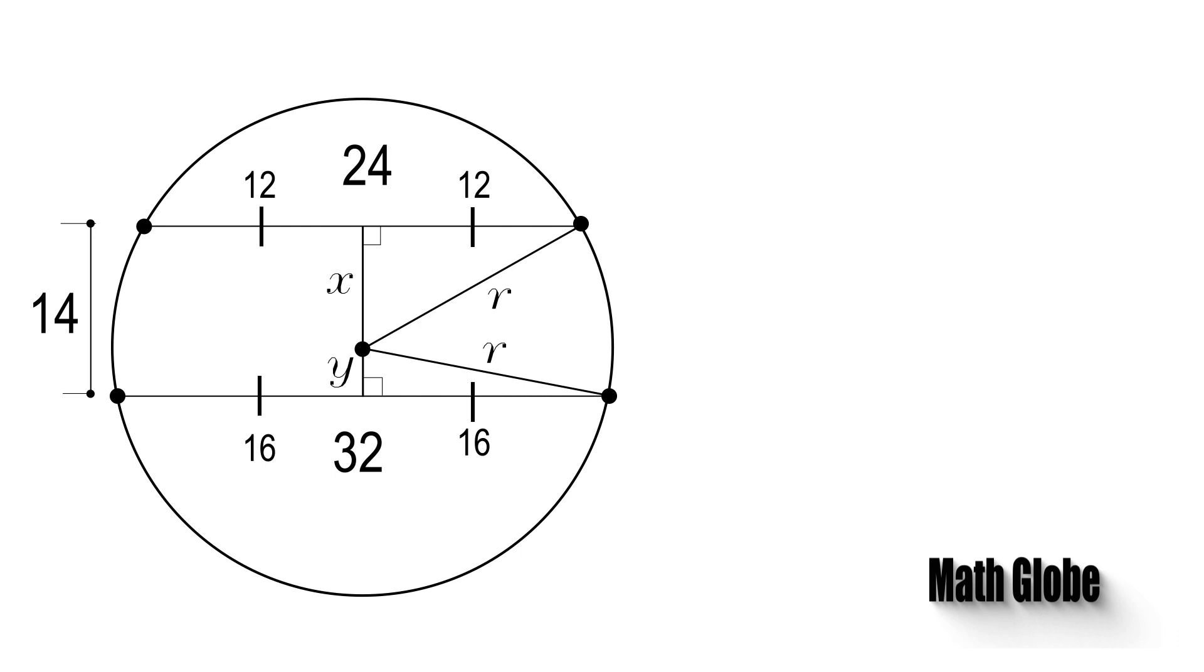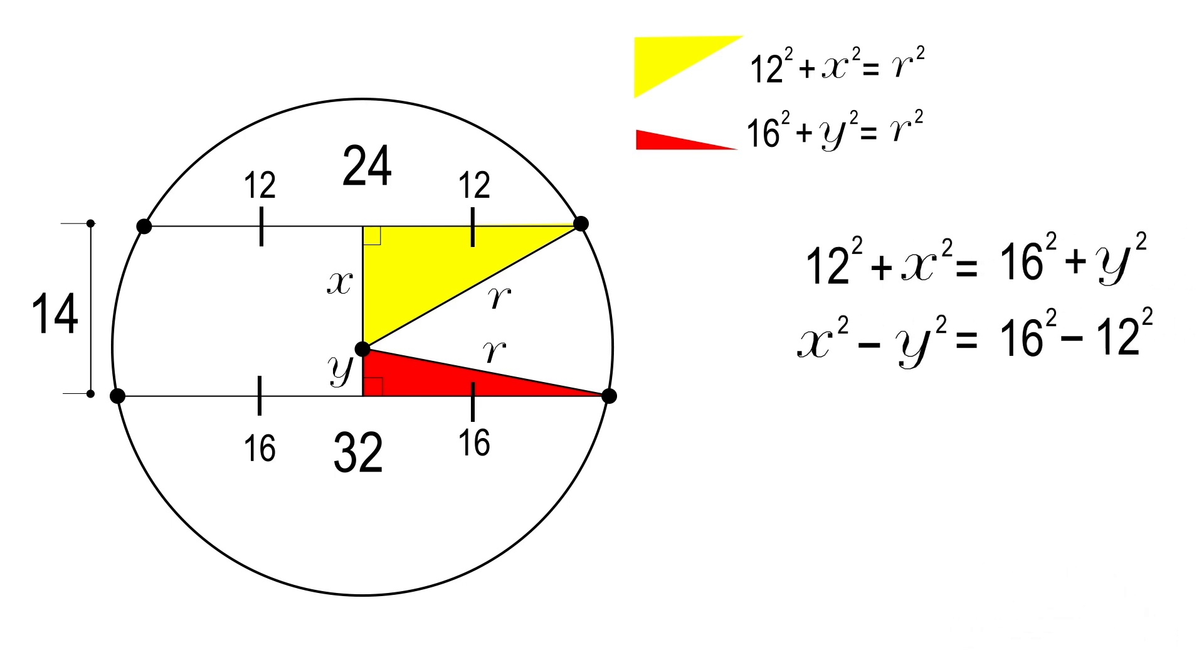Okay now, as you can see we have formed two triangles painted with yellow and red from which we can write two equations applying Pythagoras theorem to these triangles. Playing around a bit with these equations, we'll have the simplest form as shown.